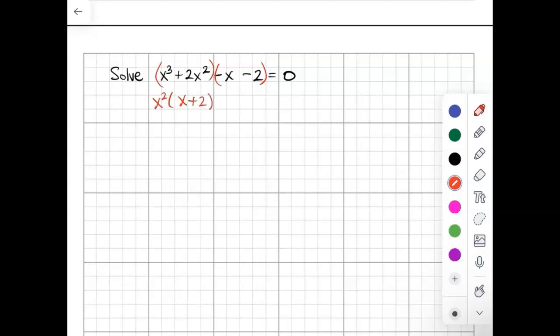And then I see that these next two factors have a negative 1 in common. If I factor that out, I get x plus 2.